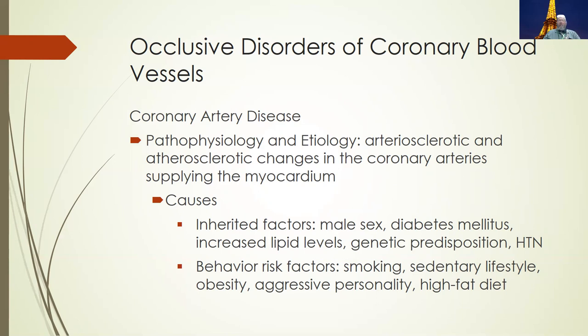Inherited factors include males more than females. Diabetics have an increase in sugar in their system, which thickens the blood. Increased lipid levels, genetic predisposition, and hypertension are also factors. Behavioral risk factors include smoking, sedentary lifestyle, obesity, aggressive personality — which actually increases your chance of coronary artery disease — and high-fat diets.